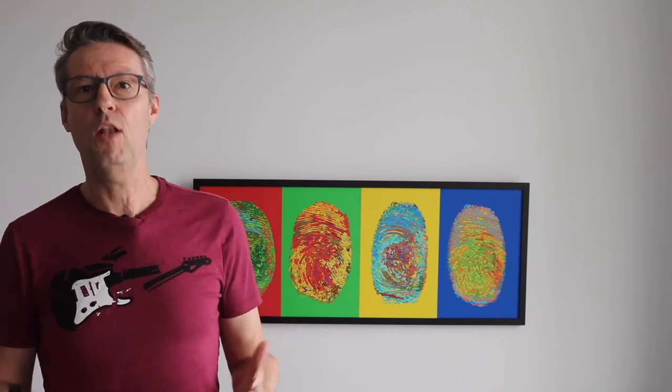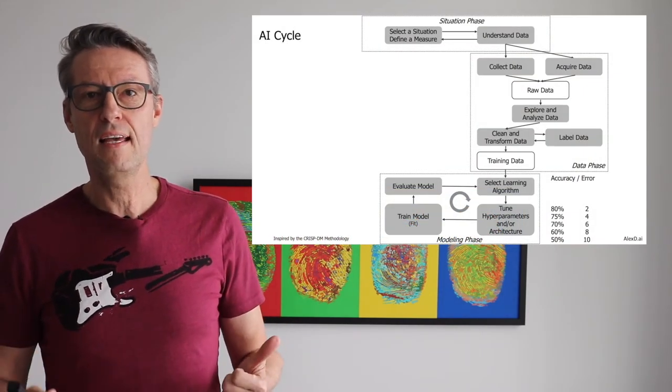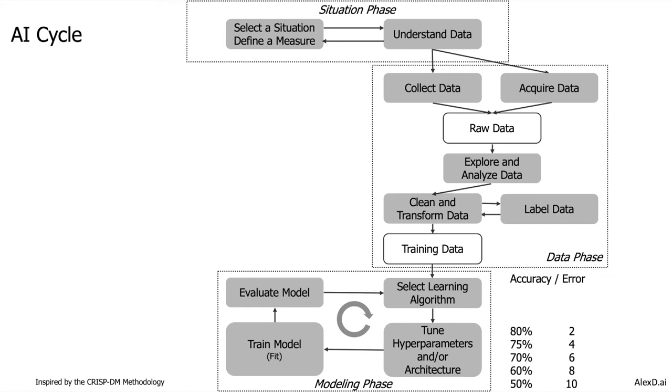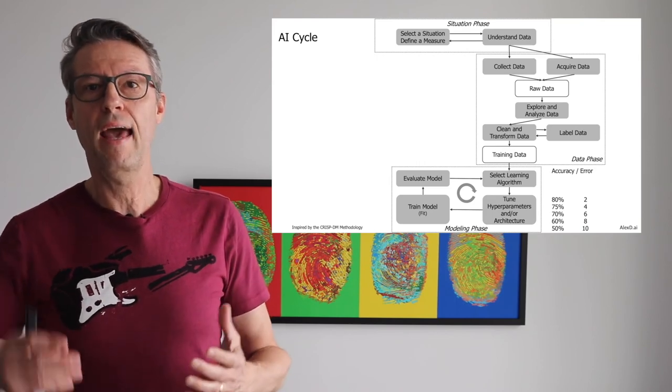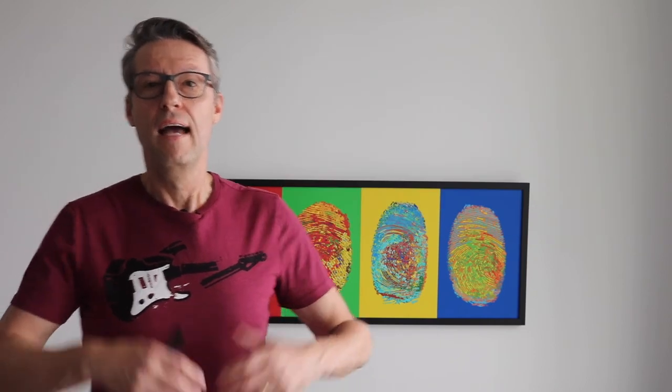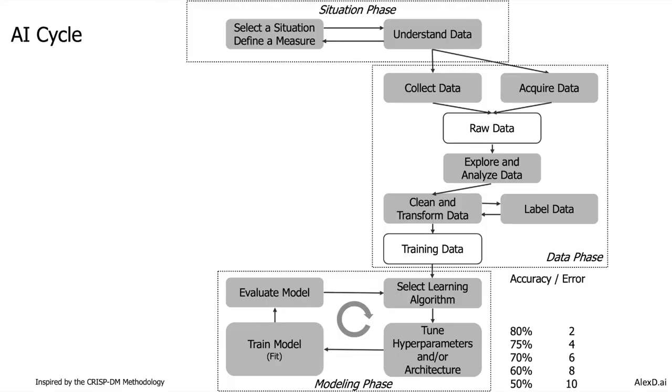After training, you evaluate your model on the validation dataset — checking if the accuracy is good or if the error is high. For example, your first model might have an accuracy of 50%, which is low and not good, with very high error. You would then choose another learning algorithm, tune your hyperparameters, or change the architecture, then train and evaluate again. You will see that your accuracy increases and your error decreases. This modeling phase is a very iterative phase, and you will likely pass through all these actions more than once.